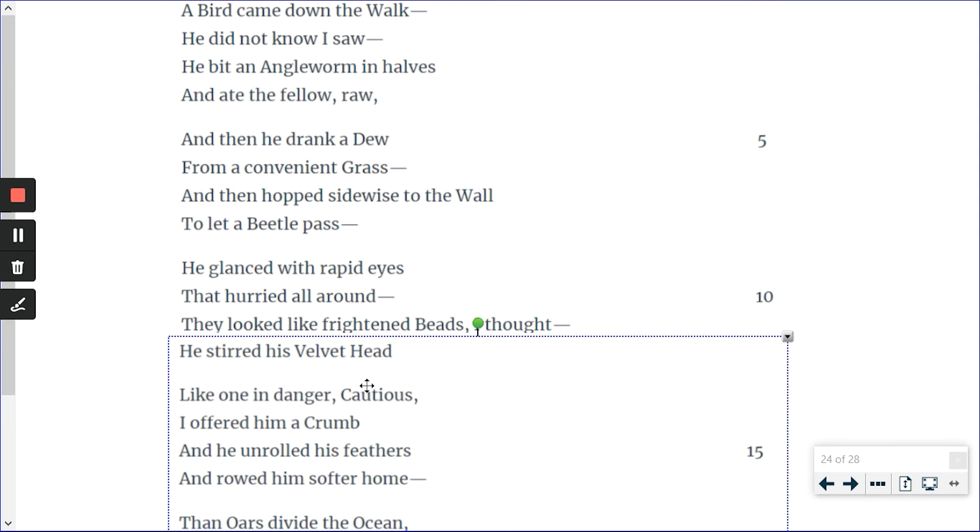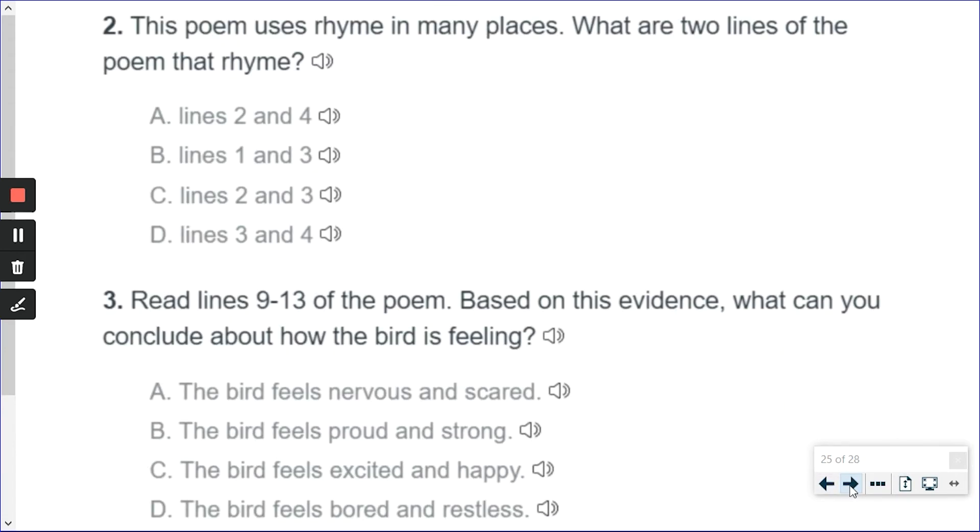Now, that's my evidence. Frightened, danger, cautious. Let me see if I can find an answer that goes with how he's feeling. The bird feels nervous and scared. I have the evidence for that. Let me see this one. The bird feels proud and strong. No. Excited and happy. No. Bored and restless. No.